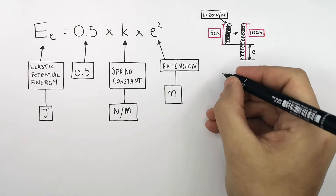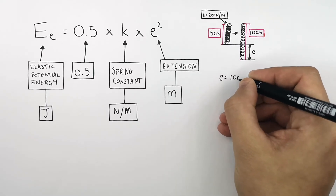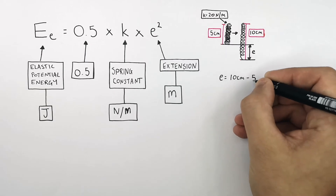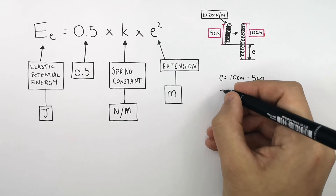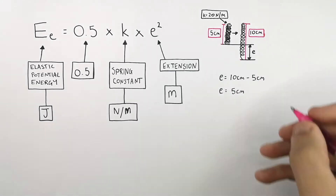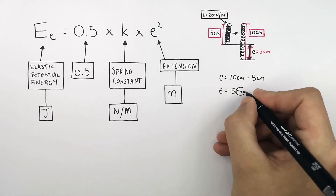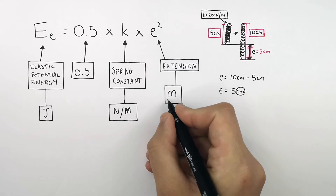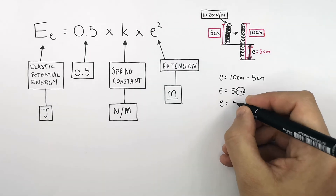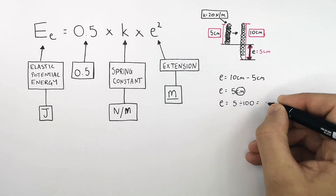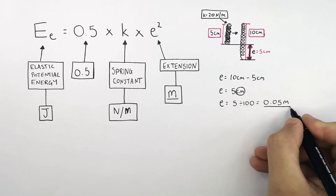So how do you calculate the extension E for the spring? That's 10 centimetres — the final length after being stretched — minus 5 centimetres, which is the initial length of the unstretched spring. So E equals 5 centimetres. But we don't want to calculate the elastic potential energy using centimetres. We need to convert centimetres into metres, so E equals 5 centimetres divided by 100, which gives 0.05 metres.